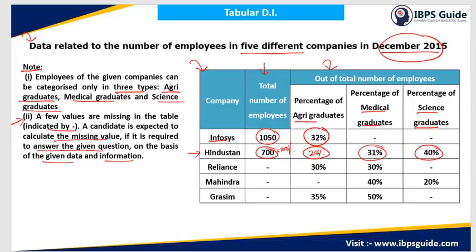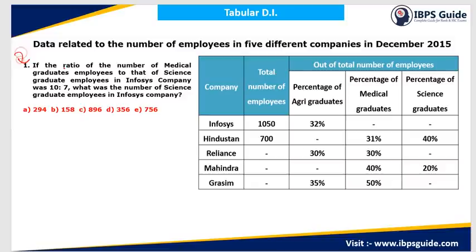Now let's solve the questions. In the first question: if the ratio of medical graduate employees to science graduate employees in Infosys company was 10:7, what was the number of science graduate employees in Infosys? In Infosys, the total is 1050, which equals 100%. The percentage of agricultural graduates is 32%, so medical and science together account for 100 minus 32 = 68%.